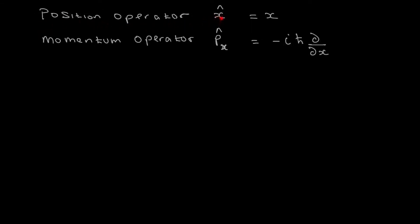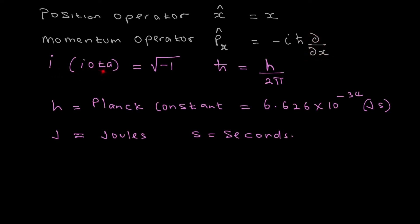The position operator x-hat equals x in value. The momentum operator p-hat in the x direction equals minus i — where i stands for iota, a complex number equal to the square root of minus 1 — times h-bar, which is h over 2π, times the partial derivative with respect to x. H-bar equals h over 2π, where h is Planck's constant, equal to 6.626 times 10 to the power of minus 34 joule-seconds.